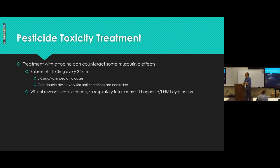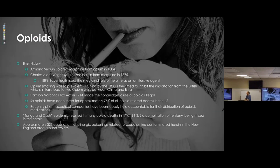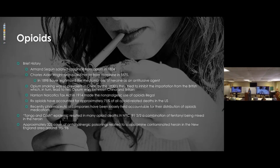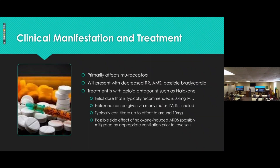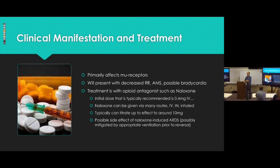Opioid overdoses — we all know what they look like. For management, the key point I want to drive home is naloxone dosing. In the hospital I give 0.4 mg IV — that should be enough to get effect. We've all seen the patient who gets 2 mg of naloxone and next thing we know they're running down the street. You don't want that, especially in the back of an ambulance where it creates a danger to the patient.